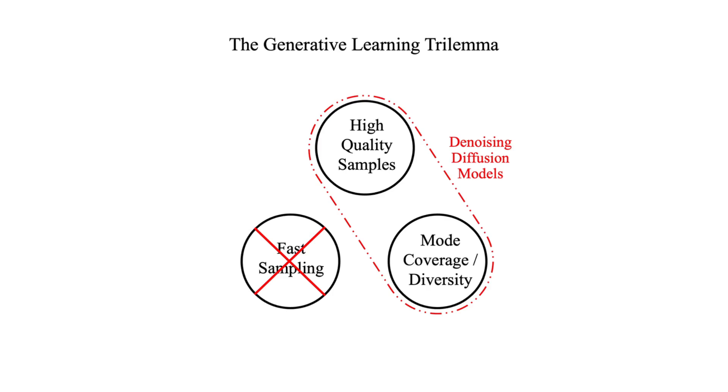They cannot deliver the sample diversity we desire. Finally we have denoising diffusion models. These models can also generate high quality samples and unlike GANs they don't have serious mode collapse issues.